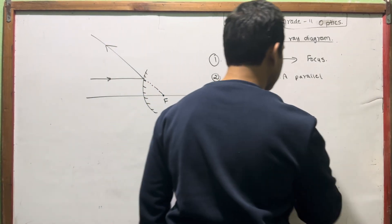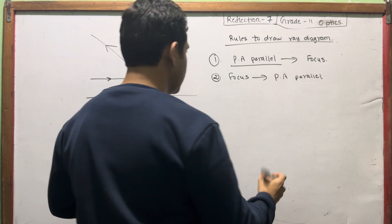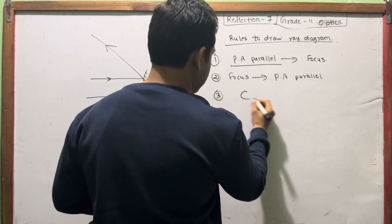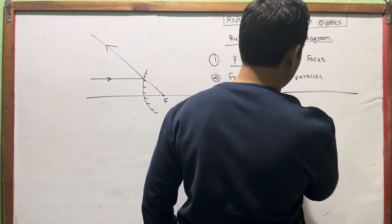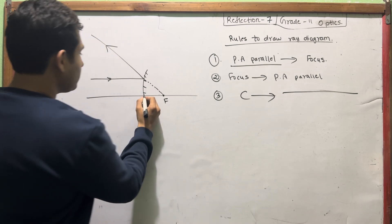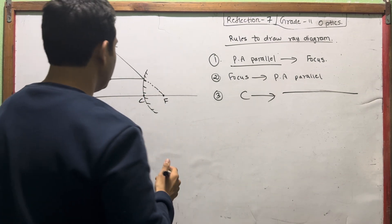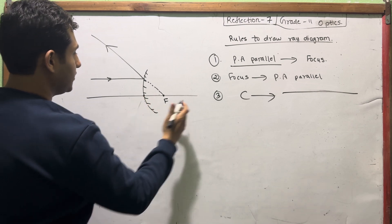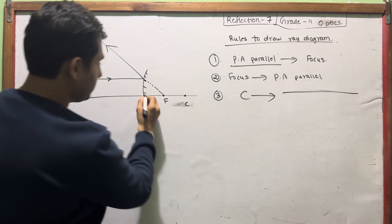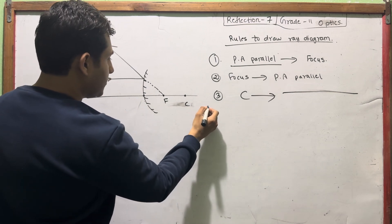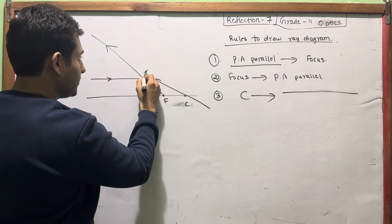Now, what is the third rule? This is simple. If you are going to the center of curvature, you can find the center of curvature. The center of curvature is very different. If you know the light rays going through the center of curvature, you will see this thing.